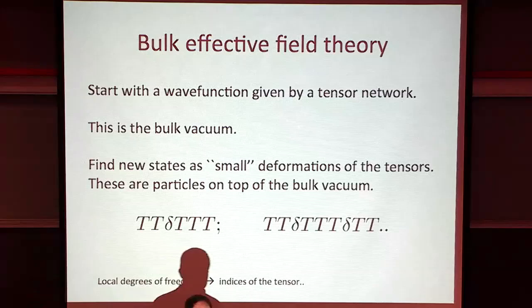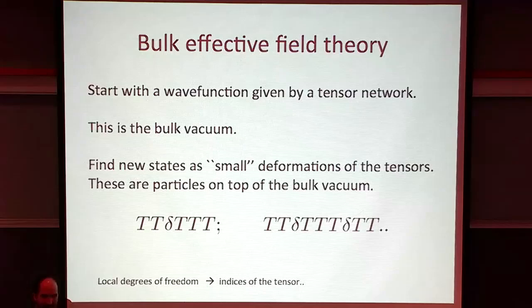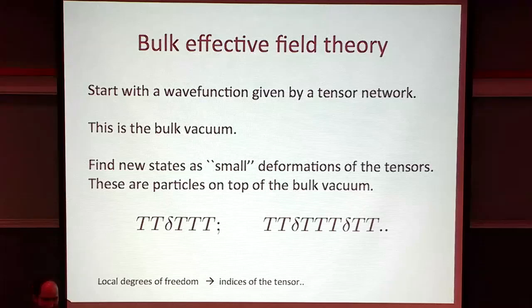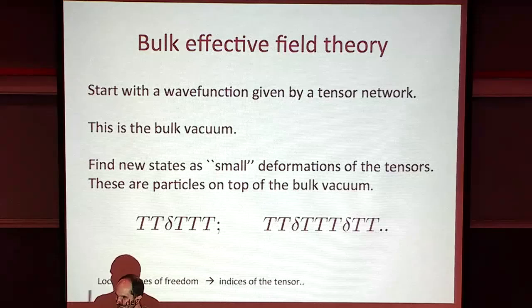These local non-gauge-invariant degrees of freedom that we normally use to describe field theory - when we think about quantum field theory, we imagine at each point in space there are some local degrees of freedom. Those should correspond to these indices of the tensor. They are not observable, not visible. What is relevant is small fluctuations of the geometry.